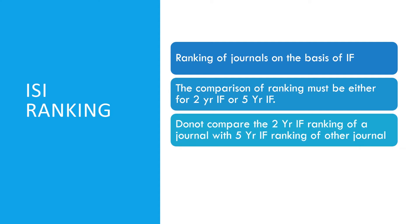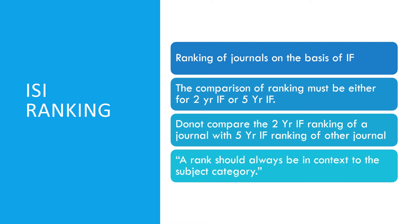Do not compare the two-year impact factor ranking of one journal with the five-year impact factor ranking of another journal. A rank should always be in context to the subject category. Within a subject category you compare journals within the same subject category and the same type of impact factor. Journals are ranked within a subject category on the basis of their impact factor.